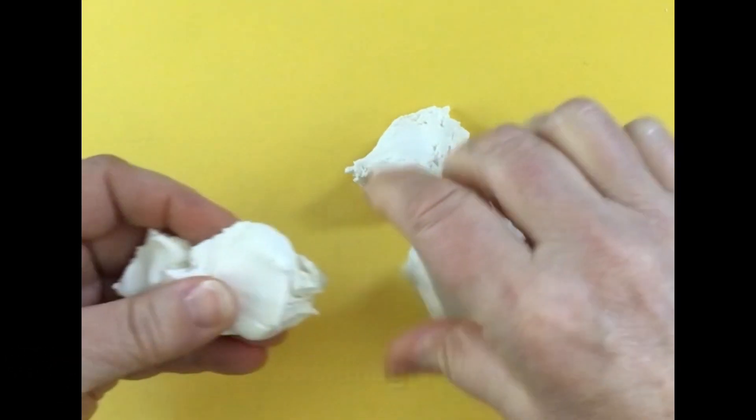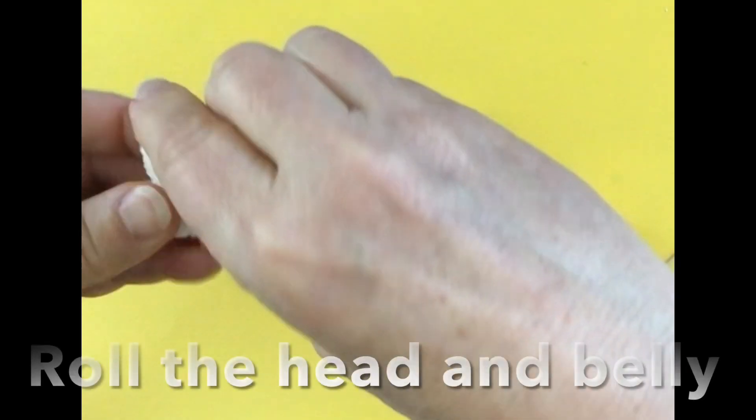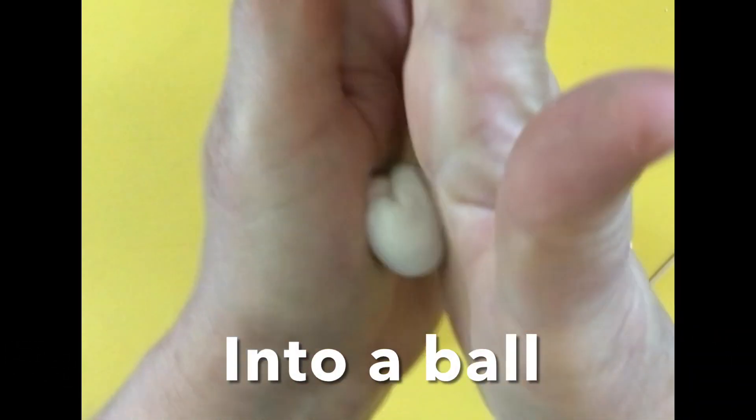I have one part that's smaller than the other part for the head. And then I'm making two equal parts for the legs and two equal parts for the arms.